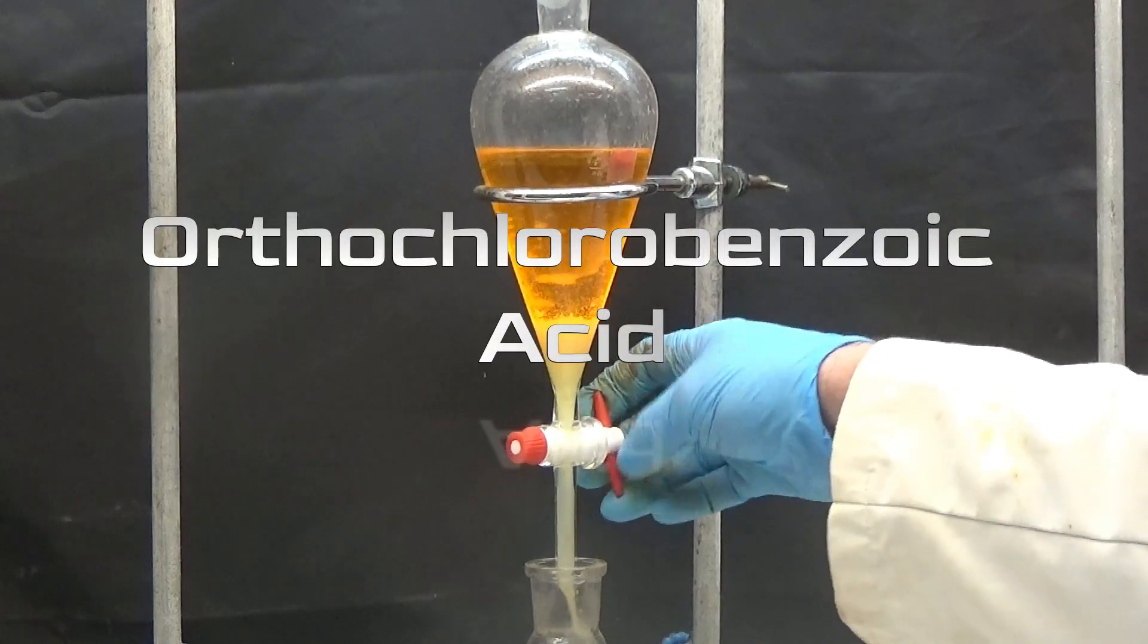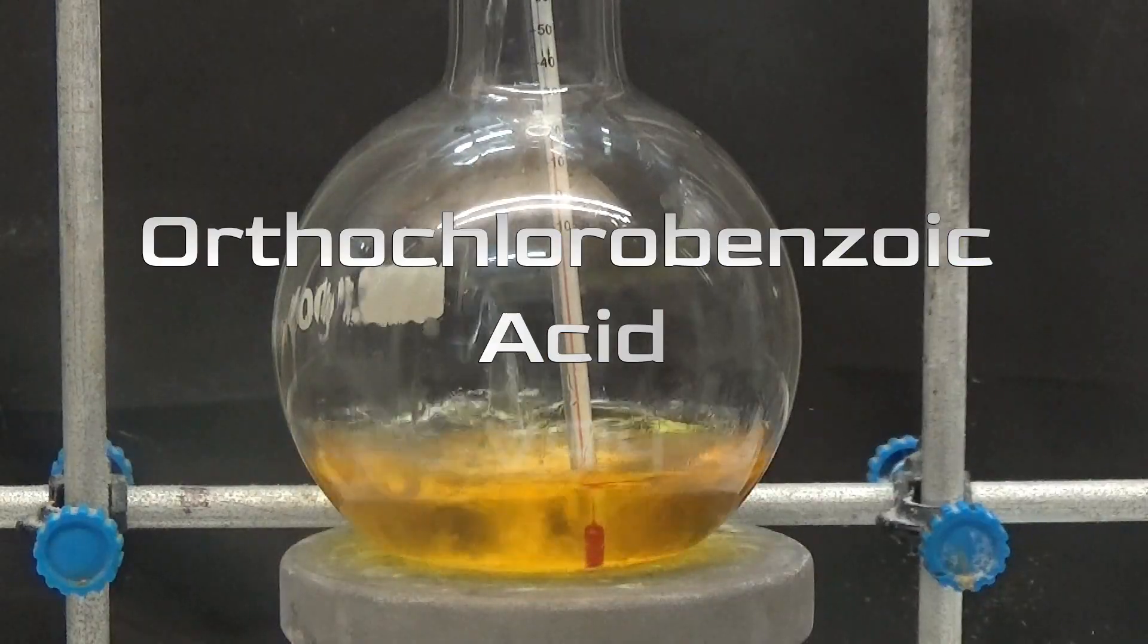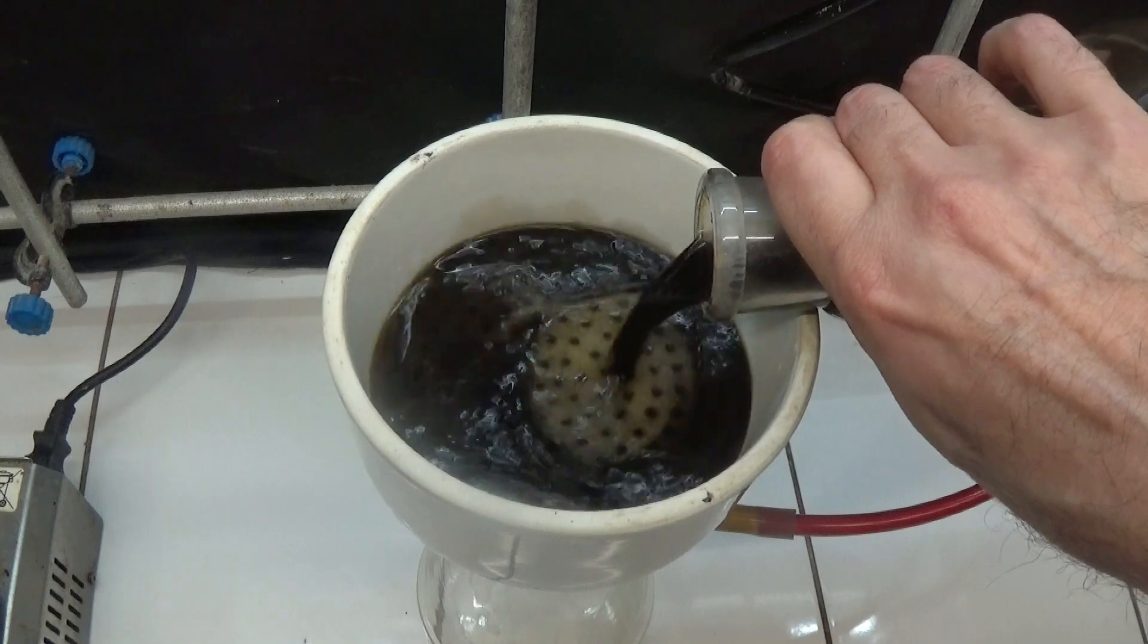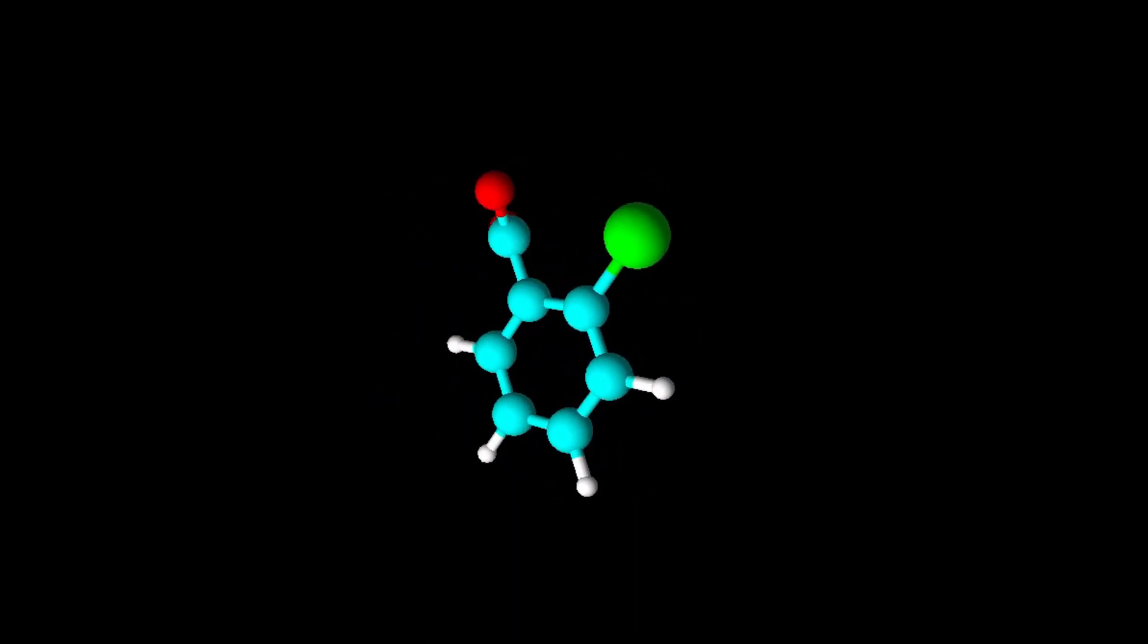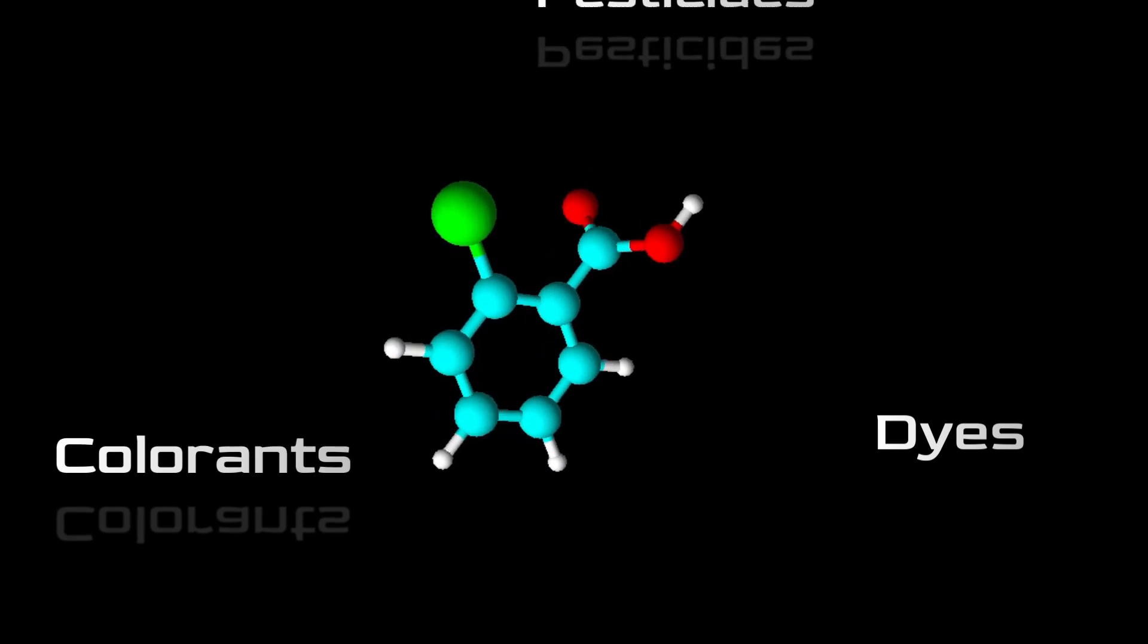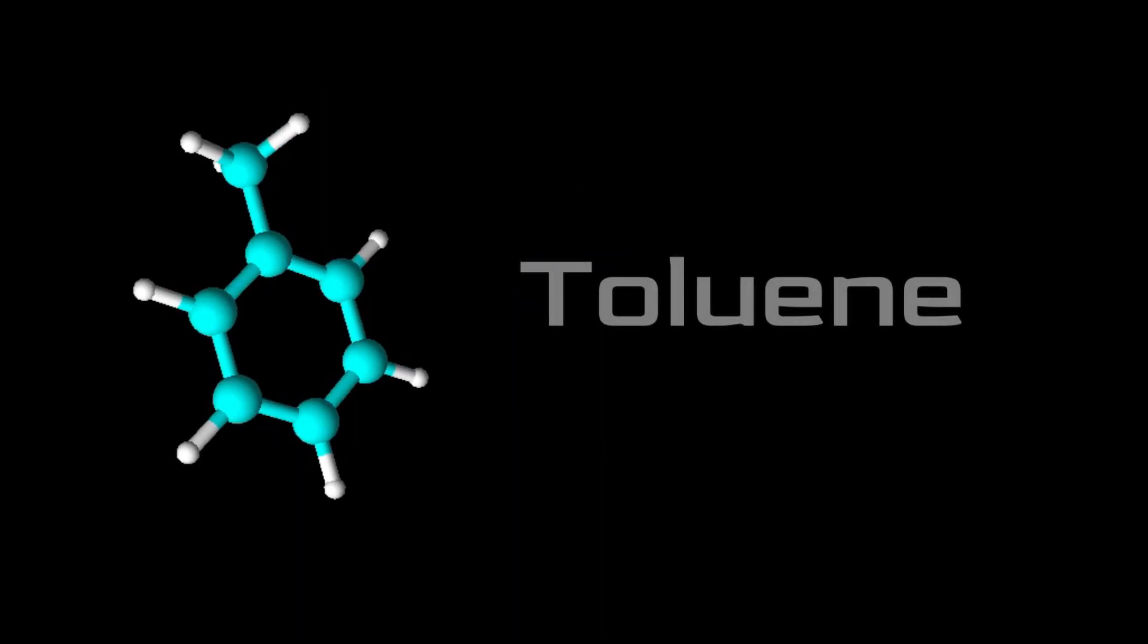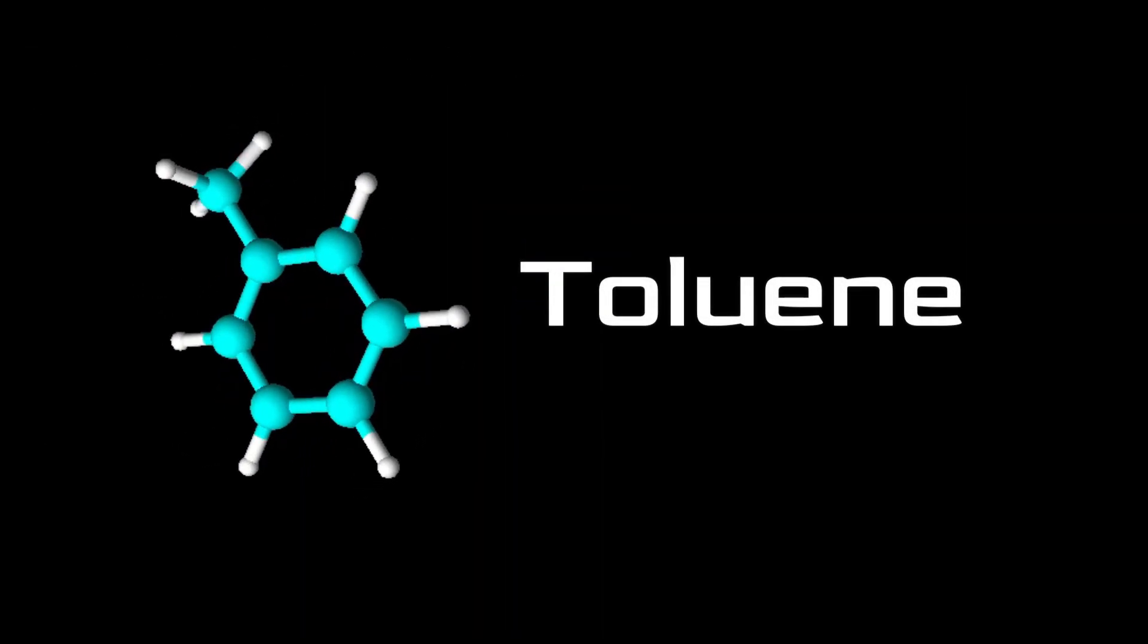In this video we are going to see how to synthesize orthochlorobenzoic acid from toluene as a raw material. Orthochlorobenzoic acid is used in the manufacture of dyes, colorants, pesticides and pharmaceuticals. In this synthesis we are going to use toluene as starting material.